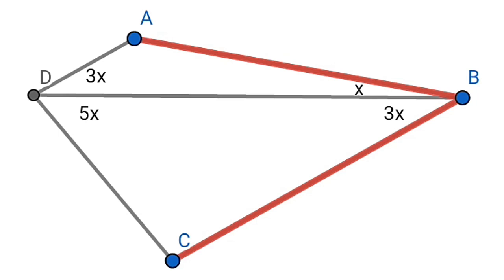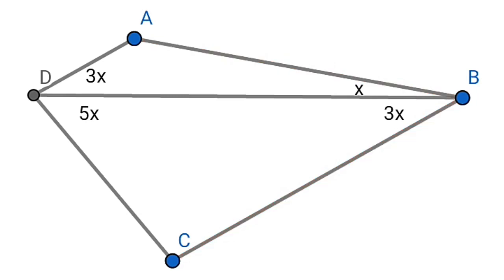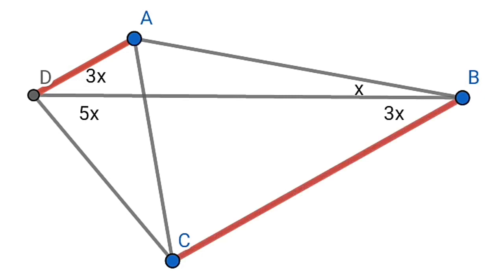Now let's come to the solution. In the triangle, AB equals BC, therefore angle ADB equals angle DBC, that is 3x. Therefore AD is parallel to BC. Again, AB equals BC, therefore angle BAC is equal to angle ACB — let this be Y.